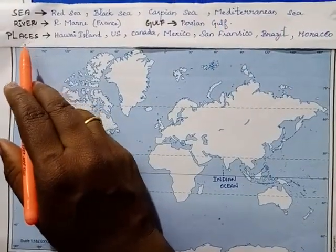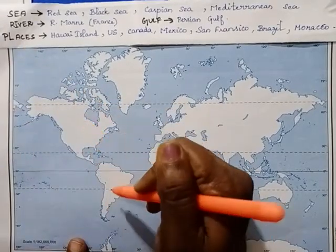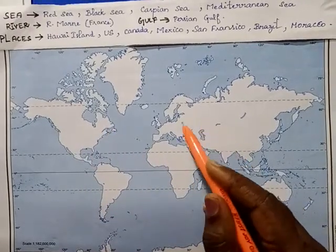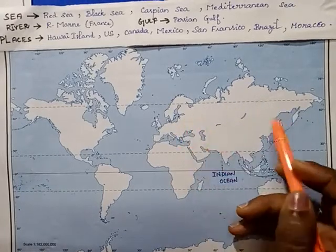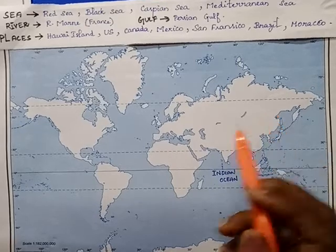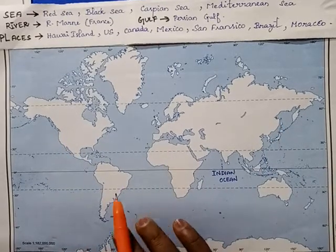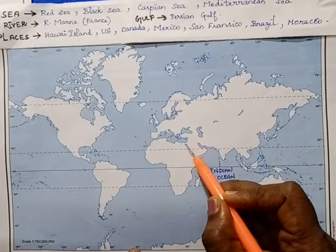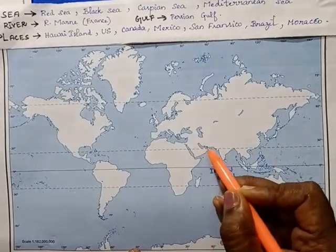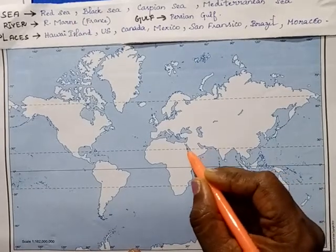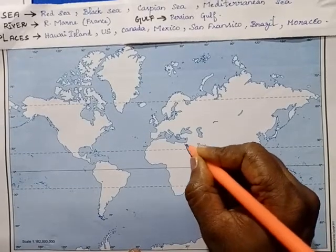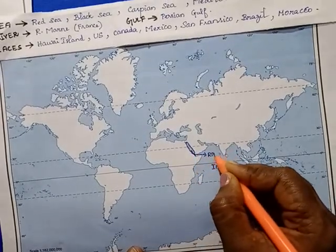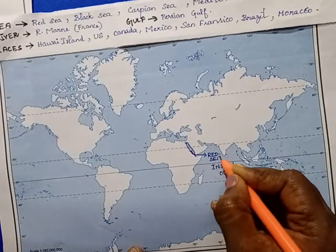Remaining places: North America, South America, Africa — three continents. Next video will cover Europe and Asia. Now, Red Sea — this is the Red Sea.